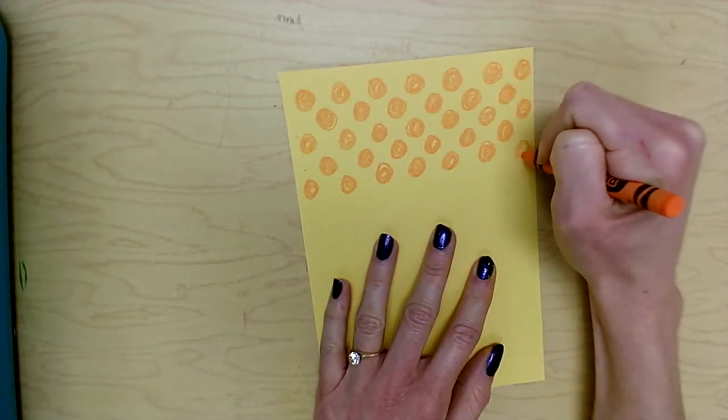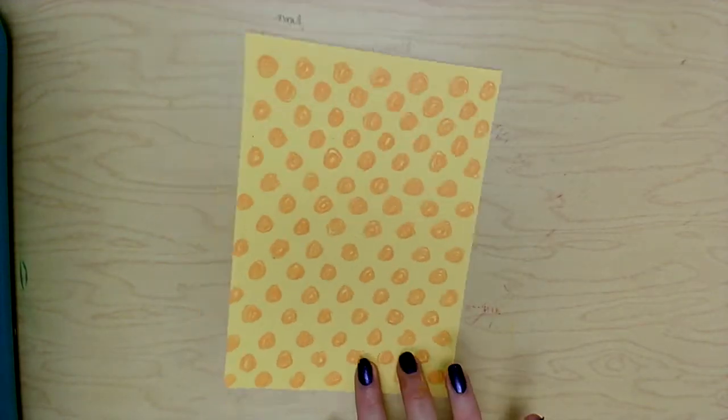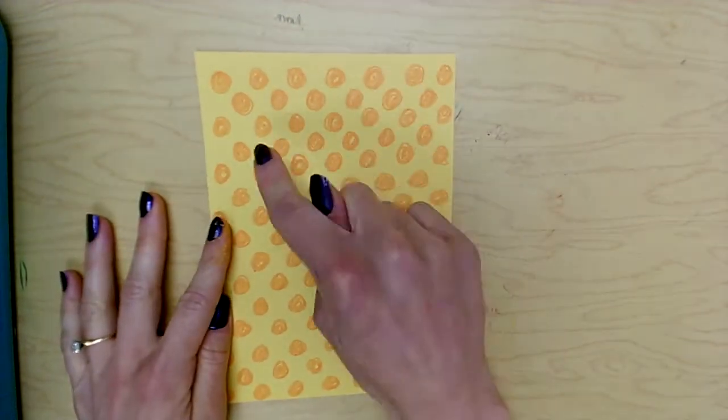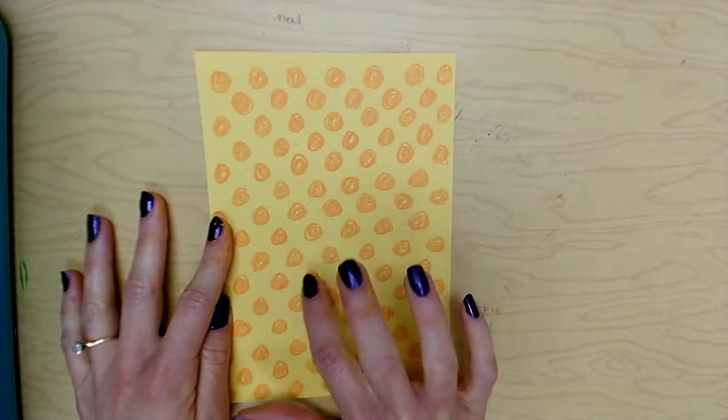Alright, so I would fill up my entire sheet until, oh my goodness, from the top to the bottom, from side to side, I have filled it all in with what would be the cells for my beehive.